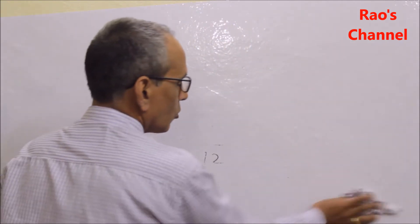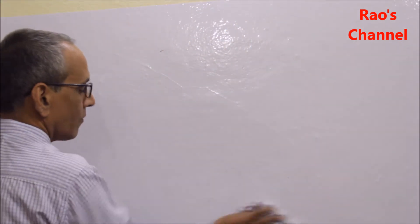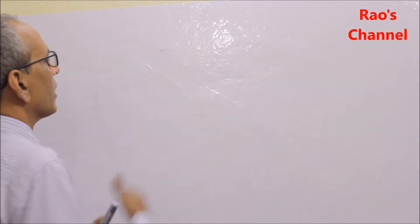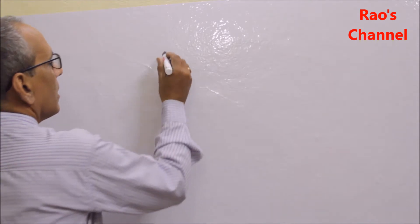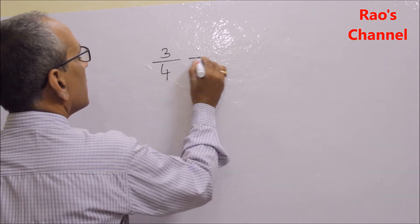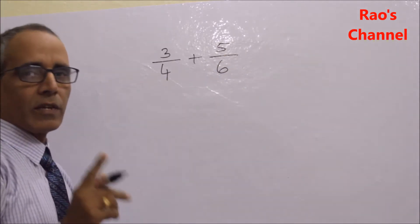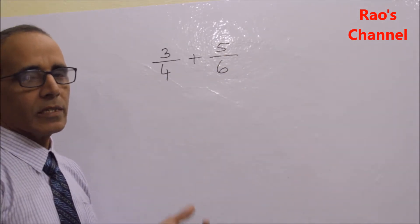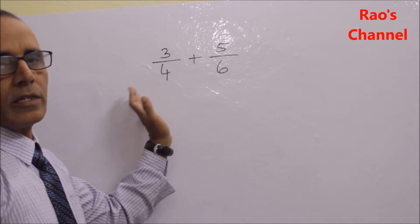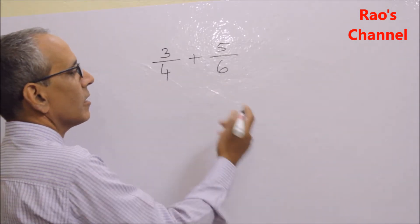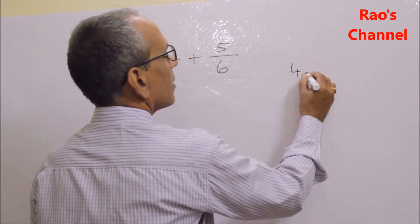LCM is the best tool to convert a pair of unlike fractions into like fractions. Unless we convert unlike into like, we cannot do any mathematical operation, particularly addition and subtraction. Here is one more pair of unlike fractions: 3 by 4 and 5 by 6. The denominators 4 and 6 are different, so again we depend on LCM to make them equal.